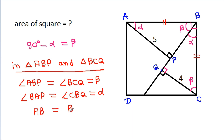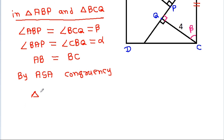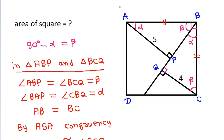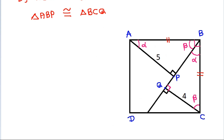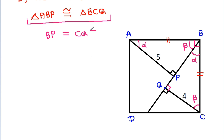AB is equal to BC. So by angle-side-angle congruency, triangle ABP is congruent to triangle BCQ. And CQ is 4, so BP is equal to CQ, and CQ is 4. So BP is equal to 4.